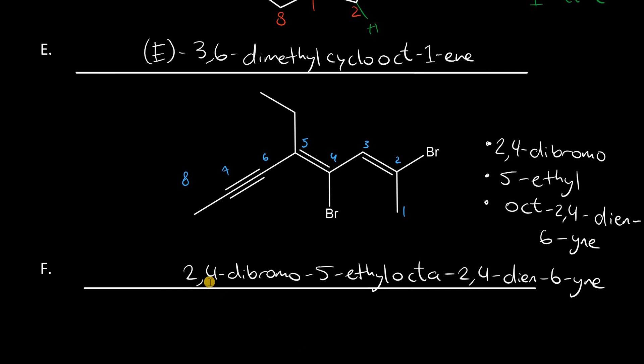Which completes the name. Here, we can include the e because it's the end of the name, but if we ever include the ene or yne in the middle, the e is chopped off. So, the entire name without any stereochem, I'm going to attempt to say this, 2,4-dibromo-5-ethyl-octa-2,4-diene-6-yne. So, it's an octadienyne. Wow. Okay, let's do stereochem and then we're done.